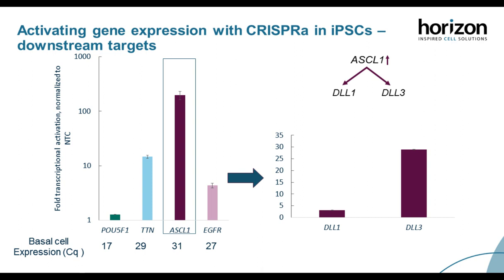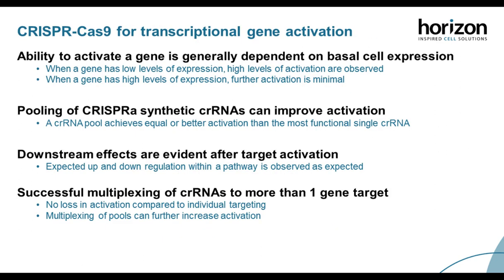Because ASCL1 had the most robust activation, we looked at the change in expression of known downstream target genes DLL1 and DLL3. We observed moderate activation of these downstream targets, as shown in the graph. Overall, CRISPR-A is an exciting new tool for better understanding gene function. The ability to activate a gene is dependent on basal cell expression, and the endogenous activation also exhibits expected downstream gene activation, which can improve understanding of gene pathways.